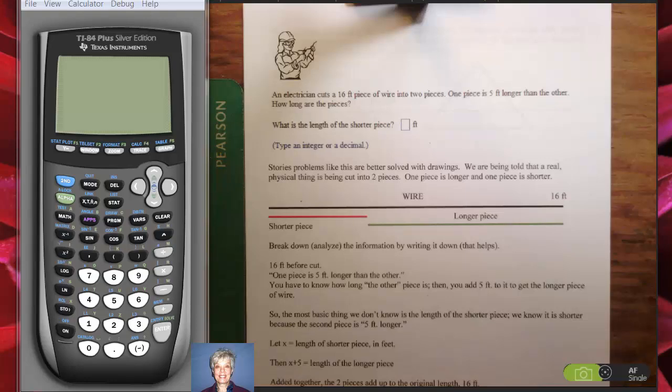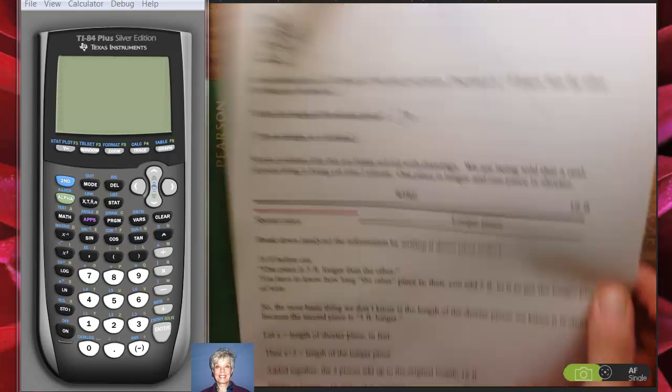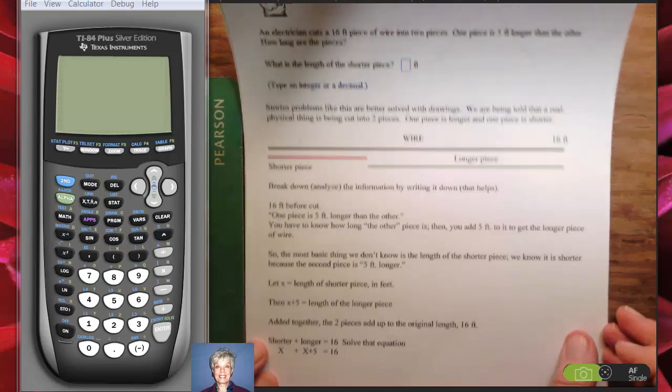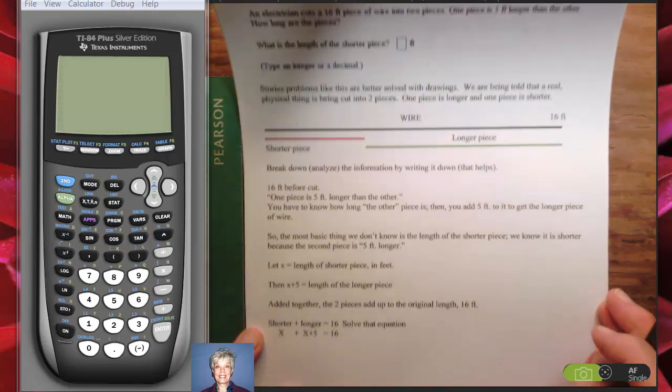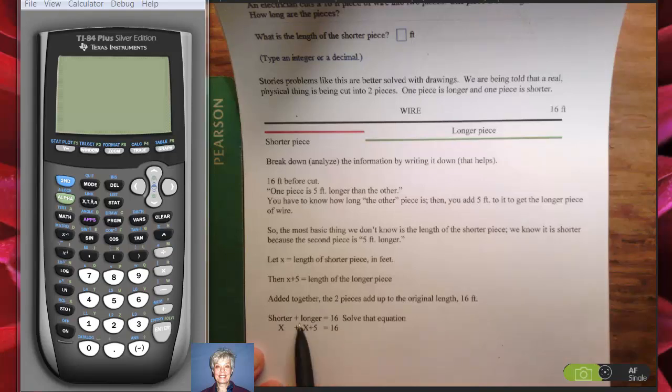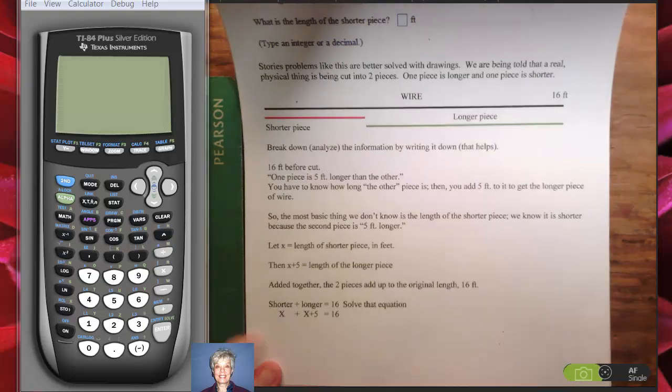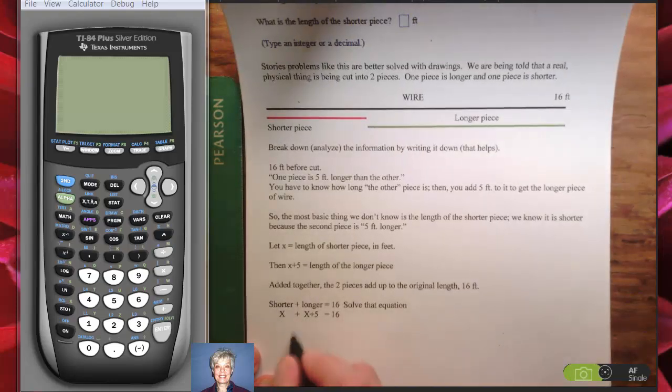The length of the shorter piece and the length of the longer piece are going to add up to 16 feet. So we have a basic equation here: shorter plus longer equals 16. Shorter is x and longer is x plus 5. If we add those together, we'll get 16. All I have to do is add my like terms. I'm going to have 2x because x plus x is 2 times x, plus 5 equals 16.